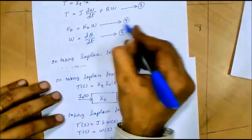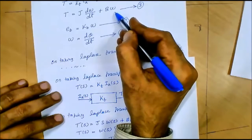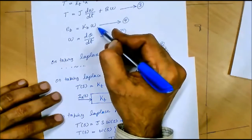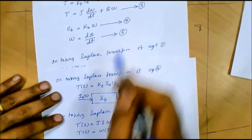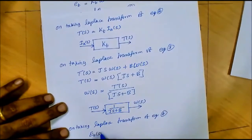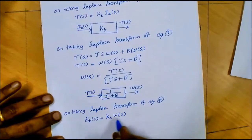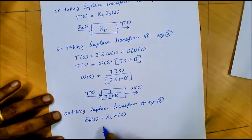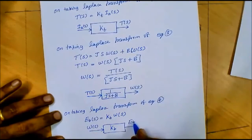Now let us consider equation 4: Eb = Kb·ω. In the previous equation we took omega as output, so here omega is the input and Eb is the output. Taking the Laplace transform: Eb(S) = Kb·ω(S). The block diagram has ω(S) as input, Kb inside the block, and Eb(S) as output.